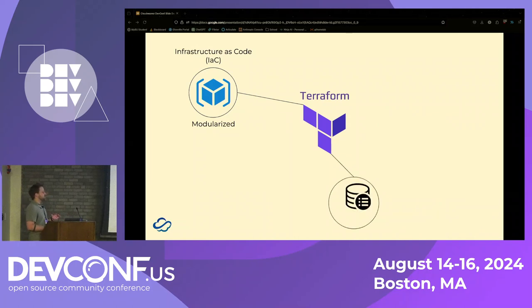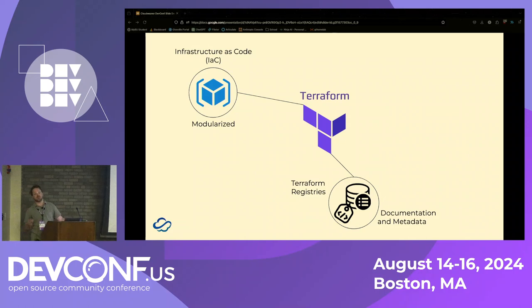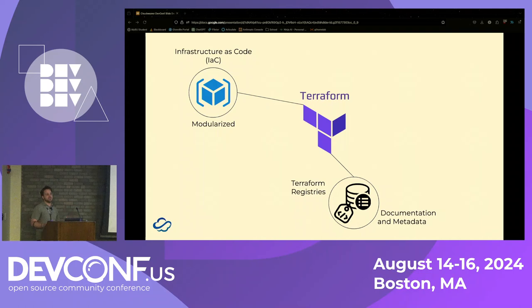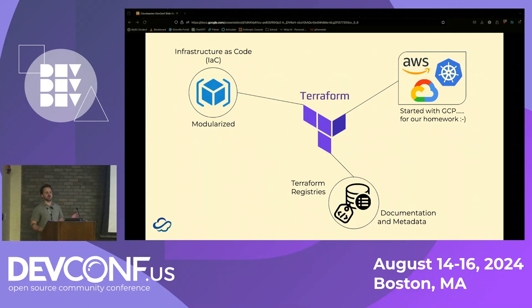There's a ton of data in Terraform registries, along with lots of documentation and metadata. There are Terraform registries specifically for each of the three big clouds with tons of code samples, documentation on both the Terraform side and service side, and YAML metadata files associated with different Terraform samples. Terraform has integrations with the three major clouds and Kubernetes. We specifically started using it for Google Cloud because our homework was on Google Cloud.